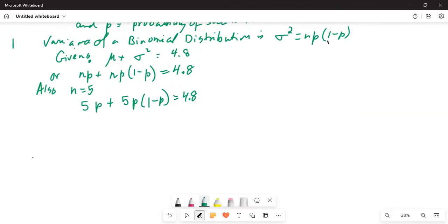Now I'm going to simplify this expression. This will be like 5p plus 5p distributed to 1 is 5p minus 5p times p is 5p square minus 5p square is equal to 4.8.